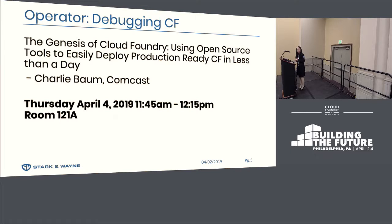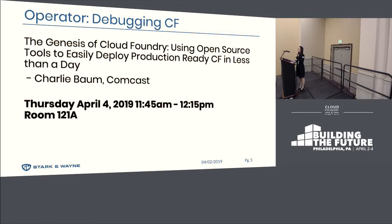Tomorrow, Charlie Baum — actually sitting right there — is going to give a talk on Genesis: how to deploy CF and the things around it efficiently, and how it worked for their business. It's tomorrow at 11:45, right before lunch. If you came to my talk on runtimes, I'm going to tell the same joke — forgive me. That's the talk right before lunch, and I believe it'll be a great appetite-builder. Please make sure you go to that one.